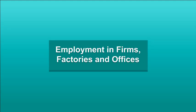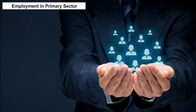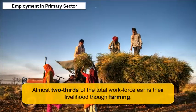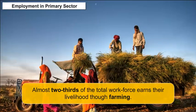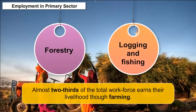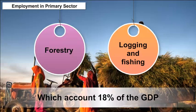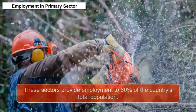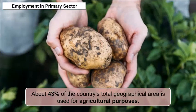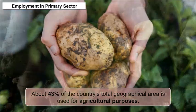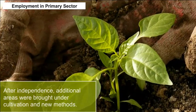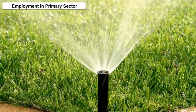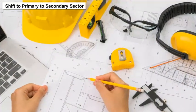In the primary sector, agriculture and mining or quarrying are the prominent economic activities. Almost two-thirds of the total workforce earns their livelihood through farming and allied sectors like forestry, lodging, and fishing, which account for 18% of GDP and provide employment to 60% of the country's total population. About 43% of the country's total geographical area is used for agricultural purposes. After independence, additional areas were brought under cultivation and new irrigation and farming techniques were introduced by the government.